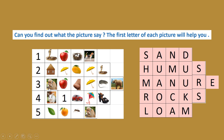Third: heart gives M, apple gives A, nose gives N, umbrella gives U, rat gives R, elephant gives E — so it becomes 'manure.' Fourth: rabbit gives R, one gives O, car gives C, kite gives K, sandals gives S — so it becomes 'rocks.' Fifth: leaf gives L, orange gives O, an gives A, monkey gives M — so it becomes 'loam,' which is a type of soil we studied.